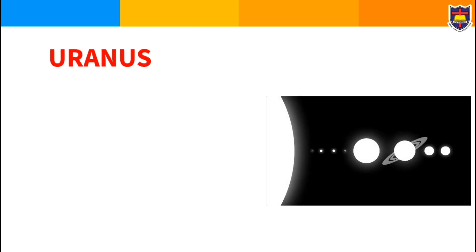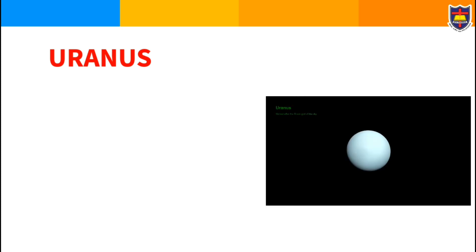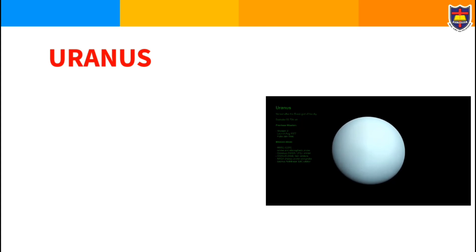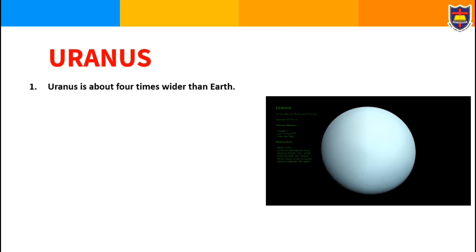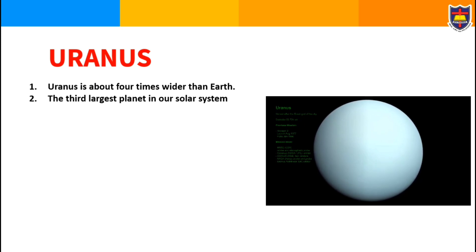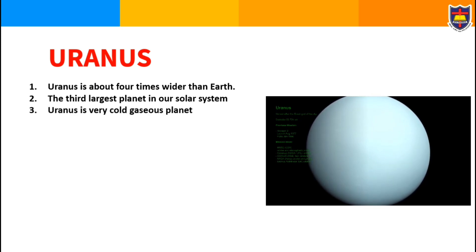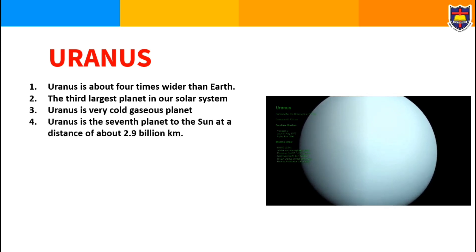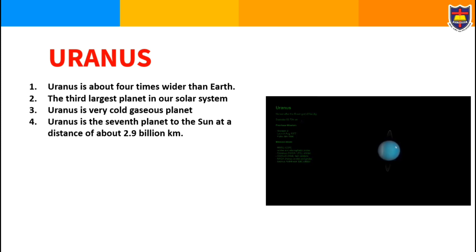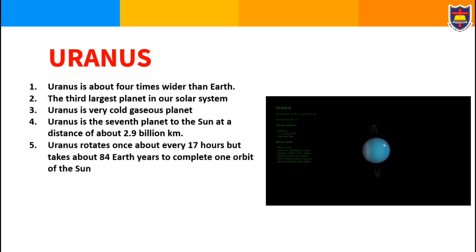Okay guys, the seventh planet is Uranus. The name like a hero in mobile, right? Okay, Uranus is about four times wider than Earth, the third largest planet in our solar system. Uranus is a very cold gaseous planet. Uranus is the seventh planet to the Sun at a distance of about 2.9 billion kilometers.